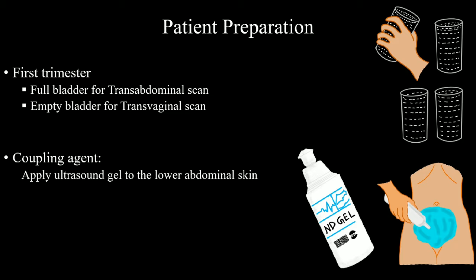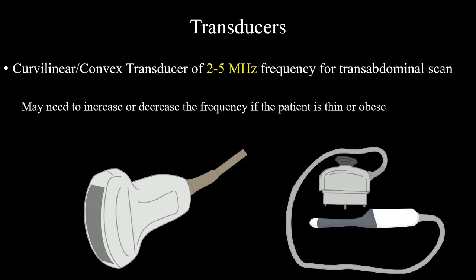Now apply ultrasound gel over the lower abdominal skin. For the transducer, we'll go for the low-frequency curvilinear probe. We use 2–5 MHz frequencies, but you should change the frequency and choose a suitable one which will make the organs well visualized. We usually increase the frequency for thin patients and decrease for obese ones. If you want to do a transvaginal scan, use a high-frequency TVS probe. TVS is the best tool for early pregnancy evaluation.